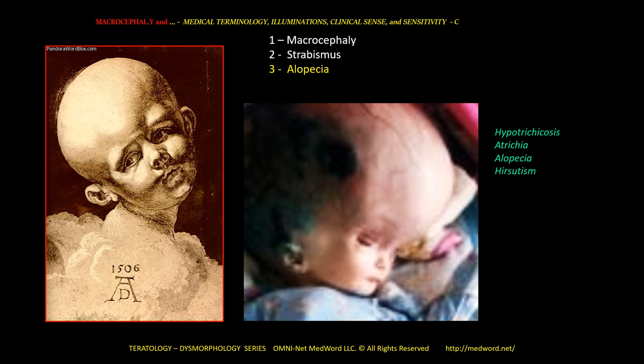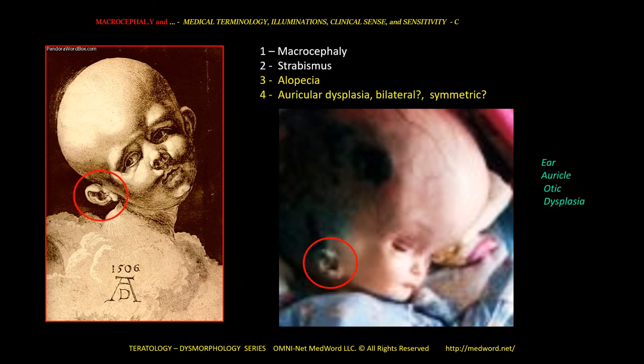I propose that the third sign is alopecia, or hypotrichosis — and if total, also referred to as atrichia. If the opposite of alopecia is hirsutism, we should keep that in mind. The fourth sign is auricular dysplasia. Is it bilateral? Is it symmetric? Dysplasias of this external cartilaginous structure — the ear, auricle, or otic — are very common and very important, in particular to judge degrees of symmetry.